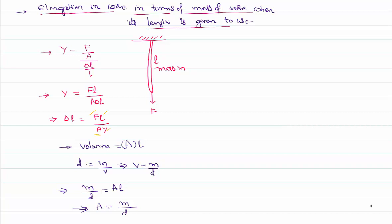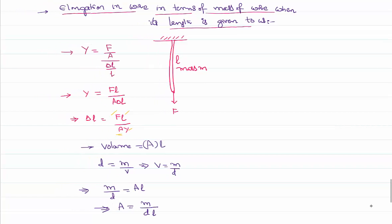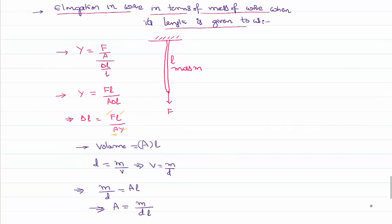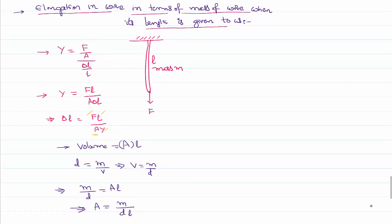Let us replace that in the given equation. That means in the place of area I'll be writing this value and see what's going to happen. Then increase in the length of the wire is force into length, and in the place of area, mass of the wire by density of the wire and length of the wire.